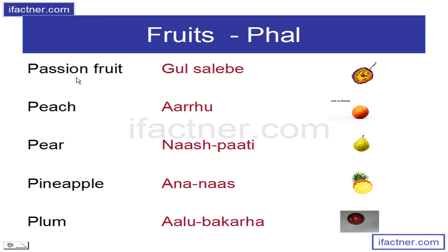Gul Sulebi – Passion Fruit, P-A-S-S-I-O-N F-R-U-I-T, Passion Fruit. Aadu – Peach, P-E-A-C-H, Peach. Naashpati – Pear, P-E-A-R, Pear. Ananas – Pineapple, P-I-N-E-A-P-P-L-E, Pineapple.